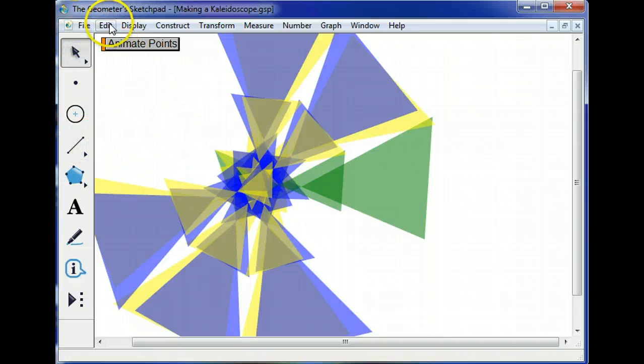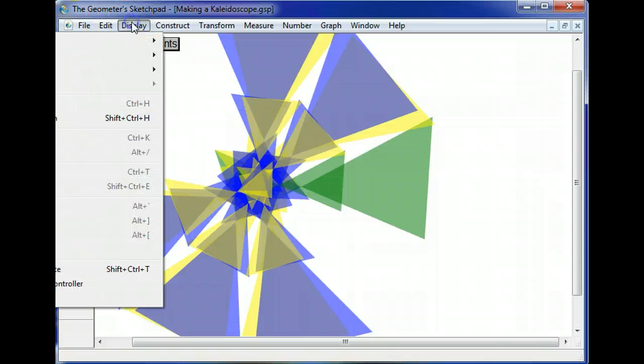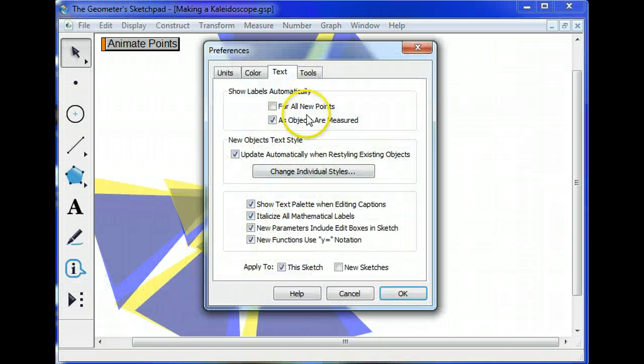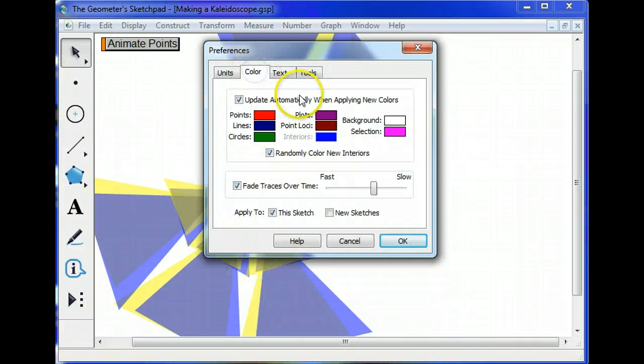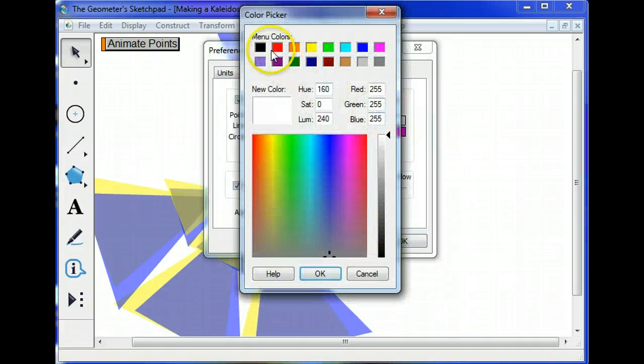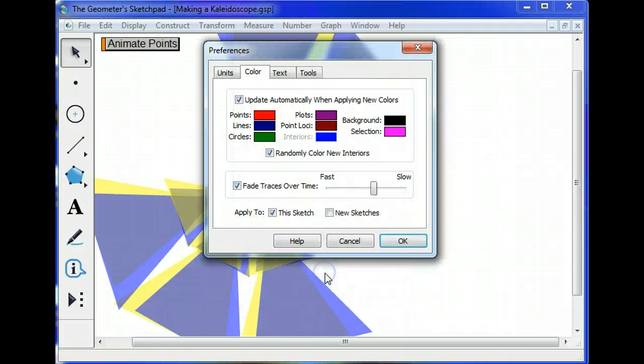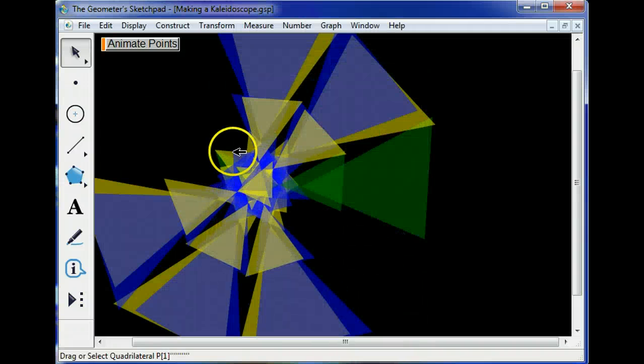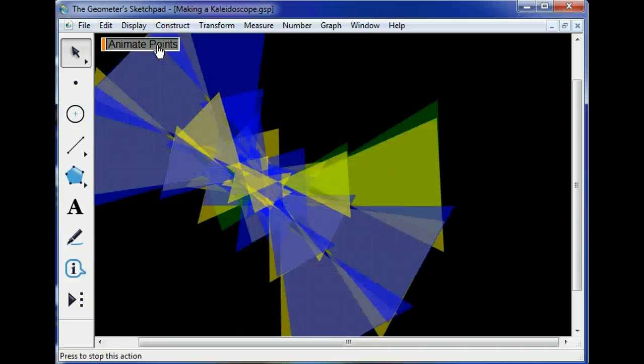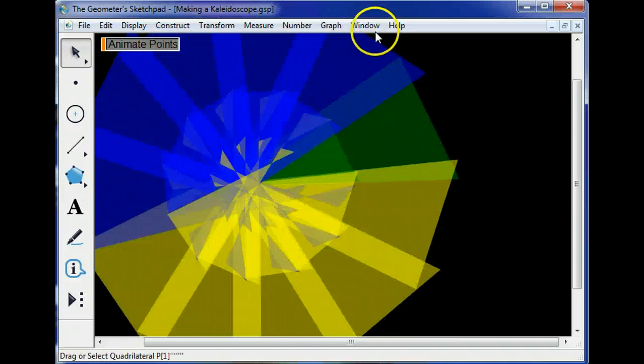And finally, I can go to display, or wait, edit, preferences, color, background. I can make the background black. Hit OK. OK. Animate points. And there's your kaleidoscope.